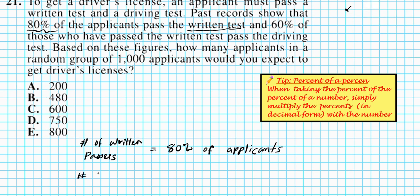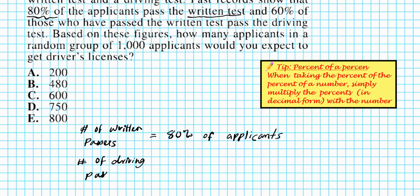Now, how many people pass the driving test? Number of driving passers. We're told in the problem that the number of people that pass the driving test are 60% of those who pass the written test. So it's basically 60% of the number of written passers. Well, what do we know about the number of people that passed the written test or written passers? They are 80% of the applicants.